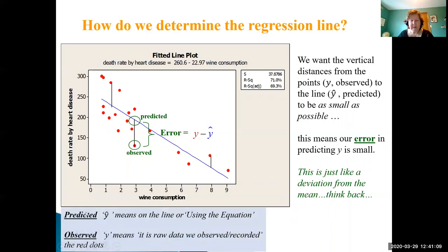For us again, remember predicted is the y hat symbol, and it means those values that are generated by the equation. Notice how some of our raw data might be very close or indeed right on the line. Our y value means it's the raw data, our actual observed values.